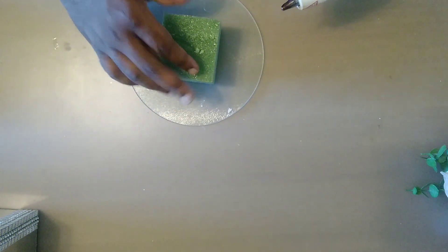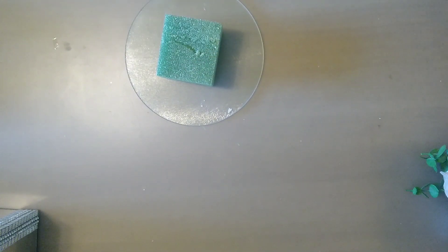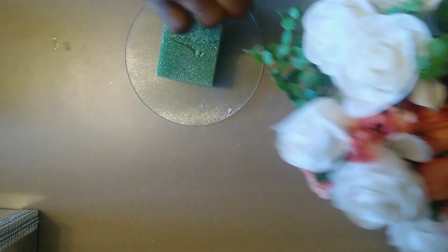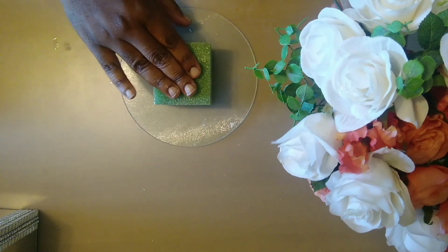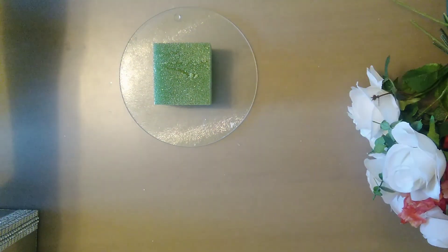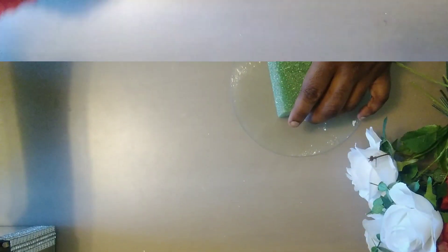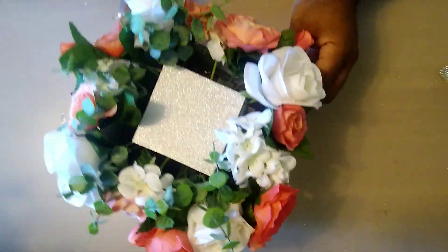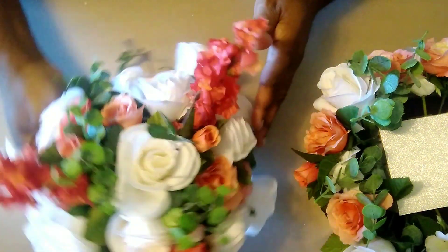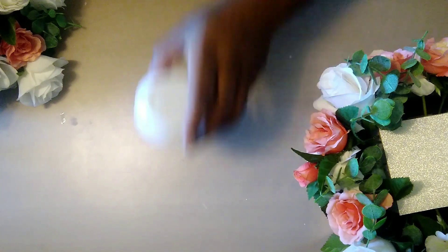So, now I'm taking a cutting board that is from the Dollar Tree, the glass cutting board. I've taken a piece of foam, glued it to the top, and I'm going to make my floral arrangement. And I'm also going to put some florals into the bottom of my mirrored box. So, this is what it looks like. If you would like for me to one day give you a tutorial on how to do a floral arrangement, please let me know down in the comment section.